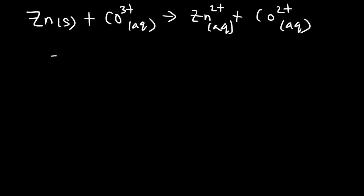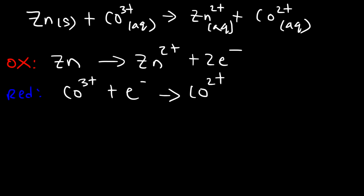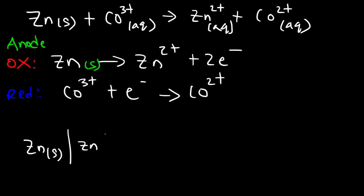Separating into two half reactions: zinc is undergoing oxidation — the electrons are on the right side — and cobalt is undergoing reduction — the electrons are on the left side. Since oxidation occurs at the anode, zinc is the anode, so we start the cell notation with zinc, then write Zn²⁺ in aqueous solution at 1 M.